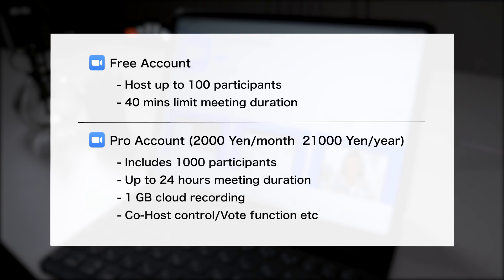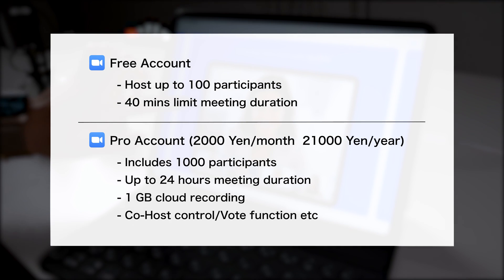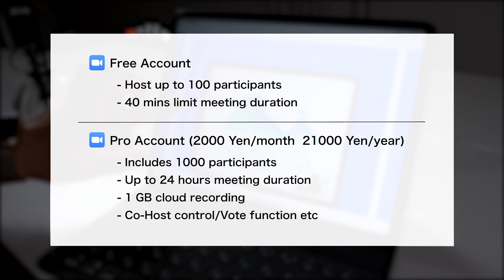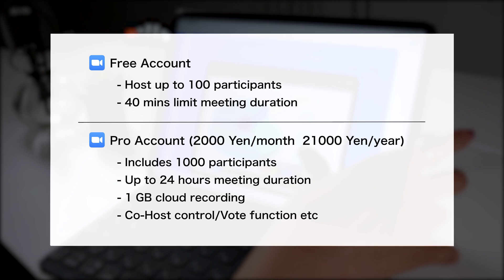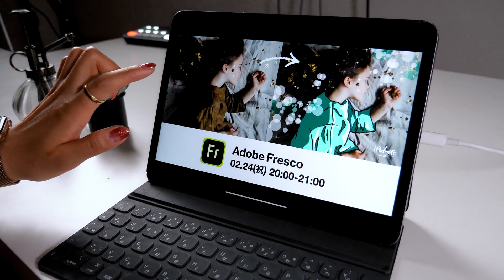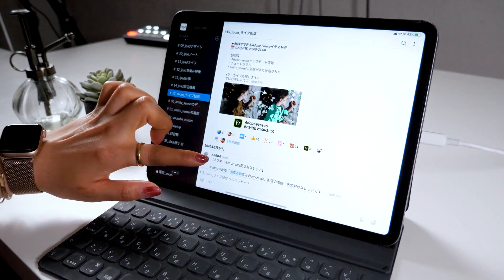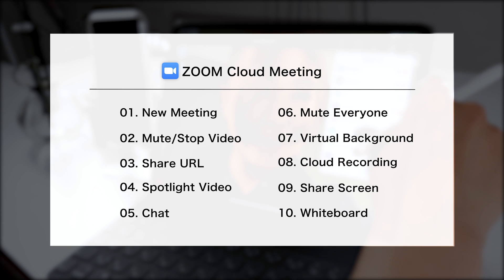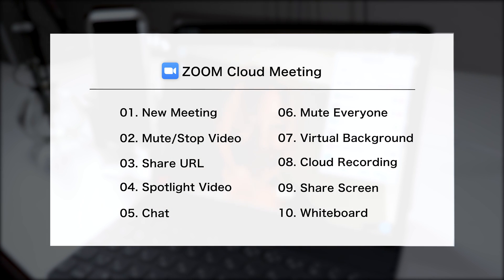There are a few things I want you to know about Zoom before we start. You can purchase either a free or professional version for your account. The pro one costs around $20 per month or $200 per year. While the free account only allows your online meeting to last for 40 minutes, the pro account has no limits. It also lets you save the online meeting as a video file, so you can send it to those who couldn't attend live. The data can be saved in the cloud. All of my iPad mates members purchased a yearly plan for the pro account. Our seminars usually last more than an hour, so I highly recommend getting a pro account if your meetings tend to last more than an hour.